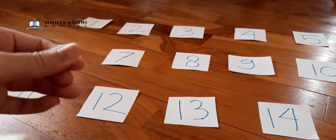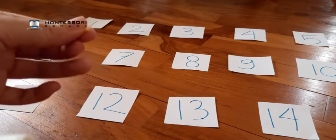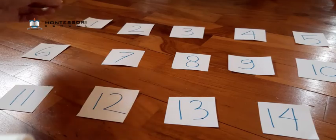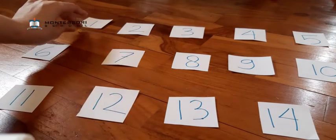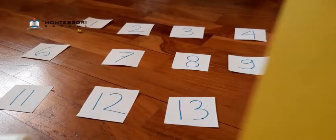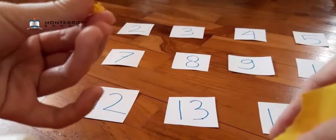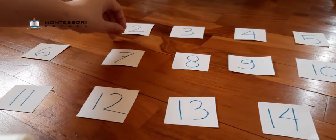So put the same amount with the right number. If it's number one, then put one paper under this number. And do it again for number two. One, two.